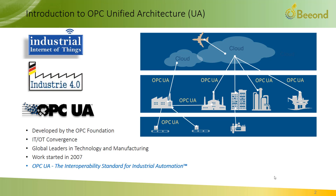Developed by the OPC Foundation, the Unified Architecture Standard is globally accepted as the one information and operational technology standard that provides a vendor-independent way for sensors, devices, controllers, and systems to effectively interoperate without the need for custom integration. OPC UA is the interoperability standard for industrial automation.